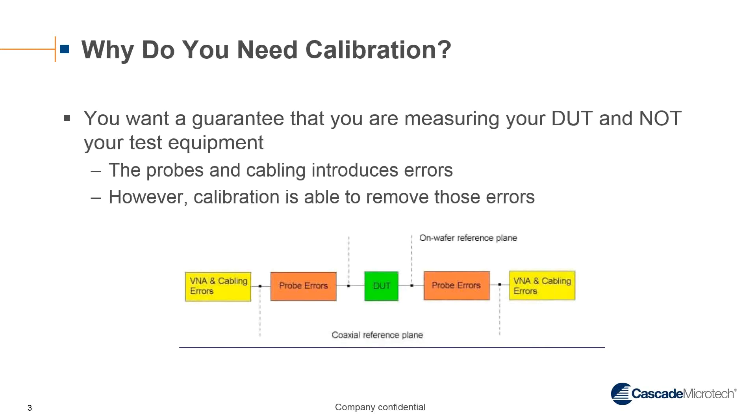Why do you need calibration? You want to be able to guarantee that you're measuring your device under test and not your test equipment. Your test equipment includes your network analyzer, the probes, and the cabling, which introduce errors into your final measurement. Calibration is the method that is used to remove these errors. The only thing you're measuring is the green box or your device under test.